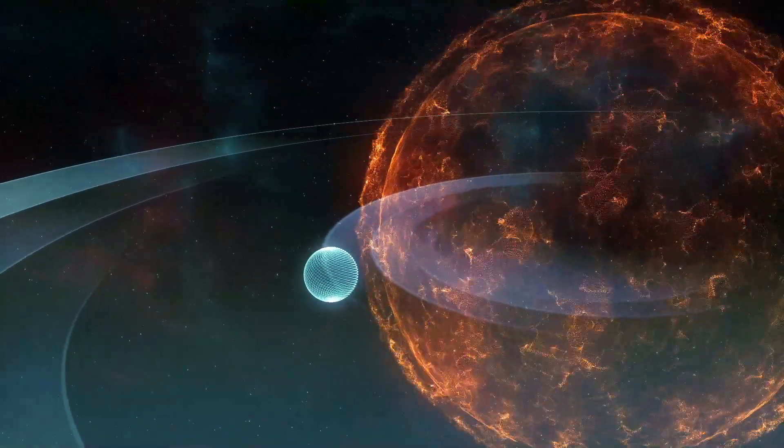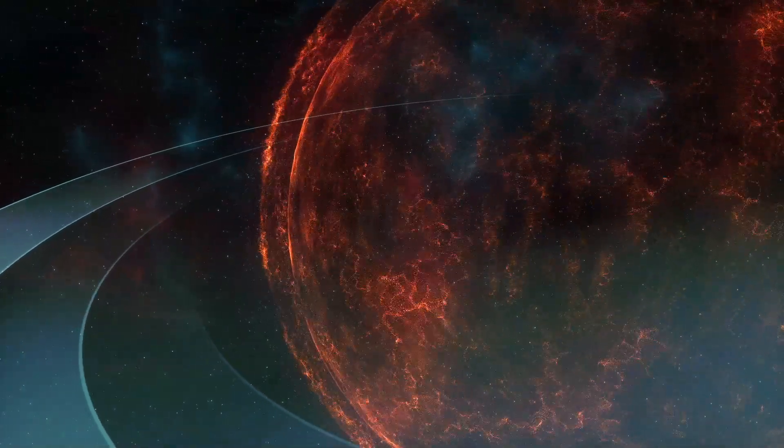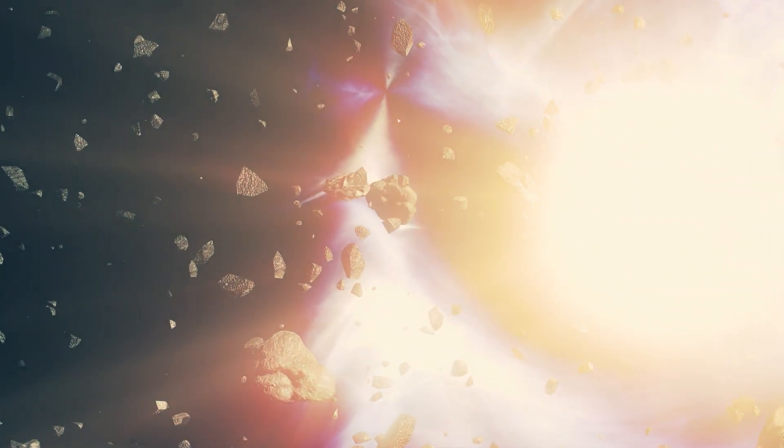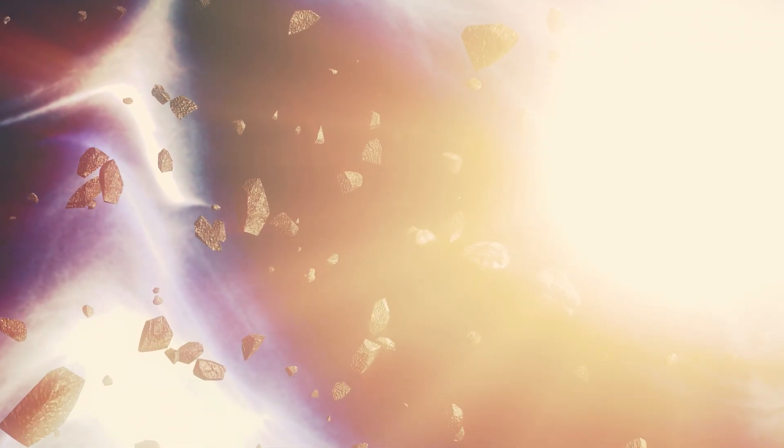However, the star will run out of fuel at some point, and the core will start collapsing. But this time, the collapse will not stop as easily and compress the core until something happens that causes the whole thing to explode in an incredibly violent way, reaching a peak brightness that can be billions of times brighter than our sun. We call this event a supernova explosion.